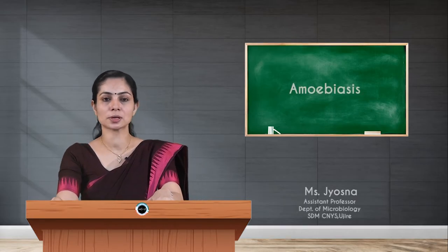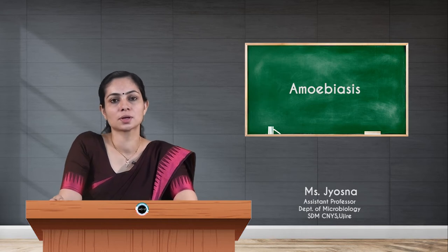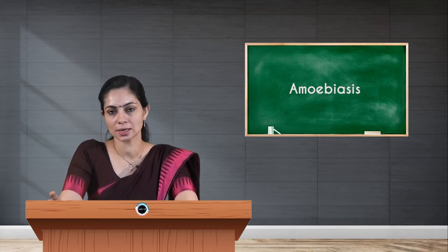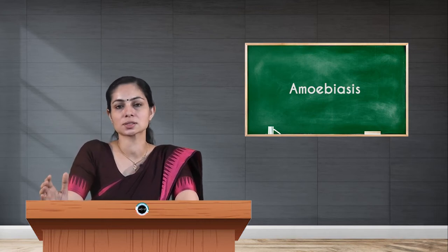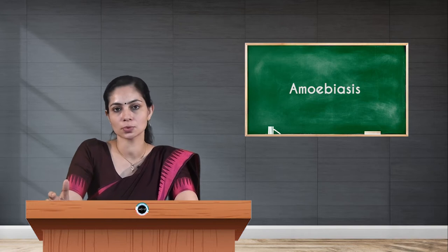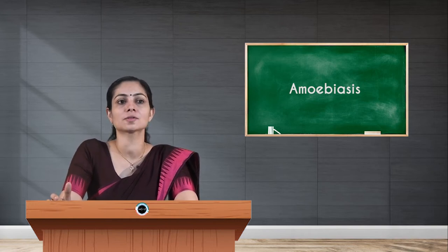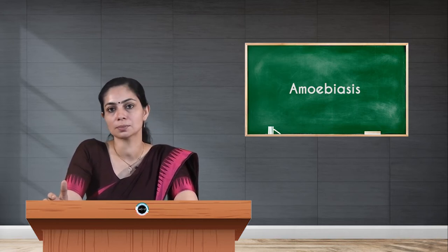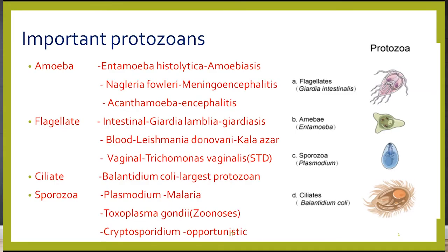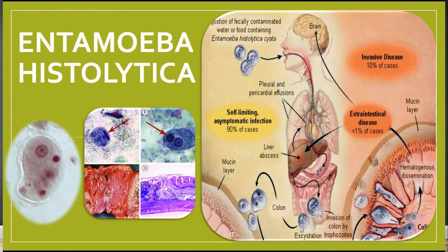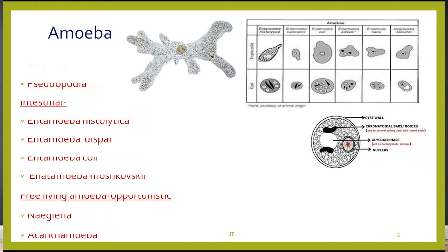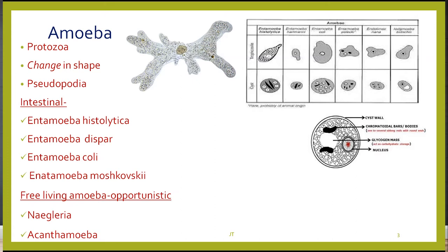Welcome to this lecture on protozoology. We are discussing different morphological forms and the introduction to parasites. Starting with the first category, protozoans, which are divided into amoeba, flagellate, ciliate, and sporozoan. Under amoeba, we have Entamoeba histolytica, which leads to amoebiasis. Today we will discuss the amoebiasis infection. Entamoeba histolytica comes under the amoeba category under protozoa — they are unicellular protozoans that keep changing shape.